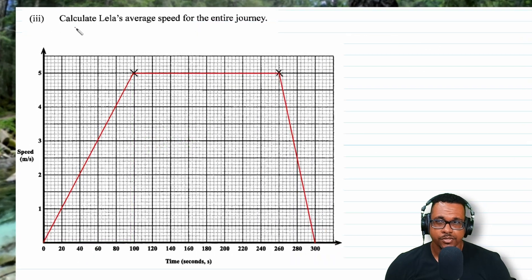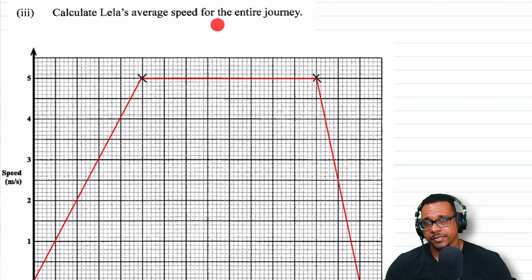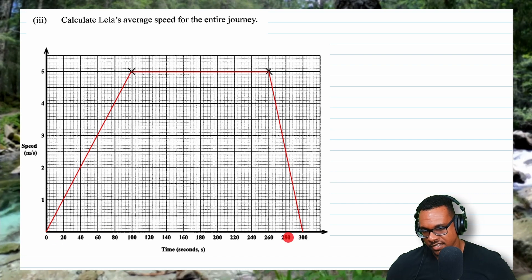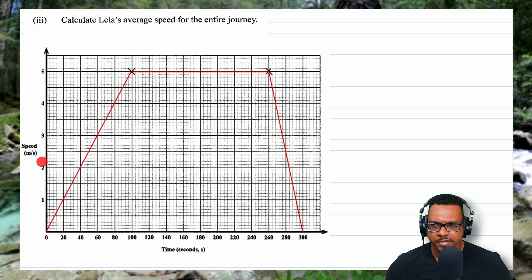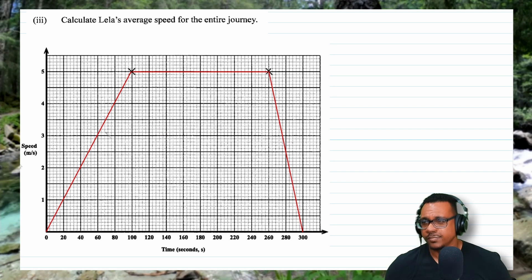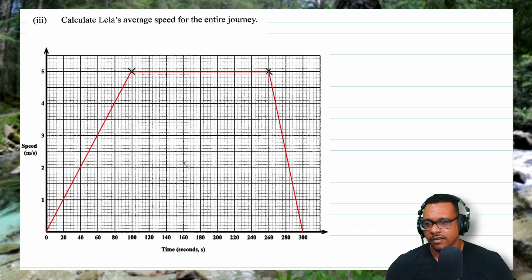For part 3, we calculate Leah's average speed for the entire journey. Average speed equals total distance over total time. The total time is 300 seconds. To find the total distance, we use the fact that the area under a speed-time graph equals distance. The shape formed is a trapezium.